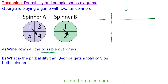A sample space diagram looks like a two-way table. On the top we have spinner A and on the side we have spinner B. On spinner A we can have the outcomes 1, 3, 4, and 5. On spinner B we can have the outcomes 1 and 2. What is the probability that Georgia gets a total of five?